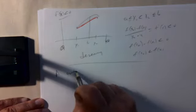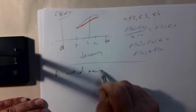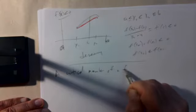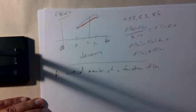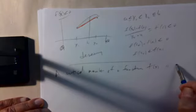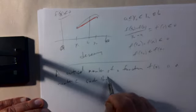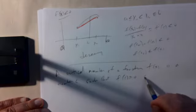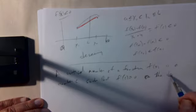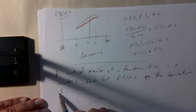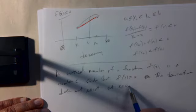Recall that a critical number of a function f(x) on an interval is a number c such that either the derivative at c is 0, or the derivative does not exist at x equals c.